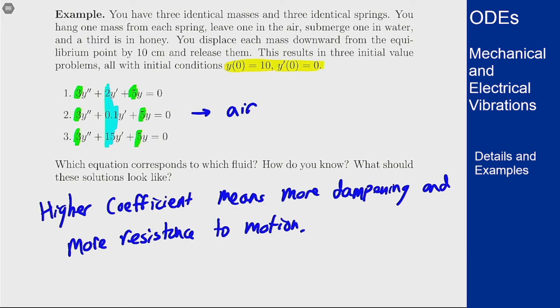And then moving on, the next least resistive thing should be the water because that's going to be less resistive than the honey. It's going to be super thick and super viscous and really restrict motion. The 2 here should correspond to water because it is the next lowest, and then the 15 is going to be the honey because it's super resistive and it's really hard for that object to move at all in the honey.